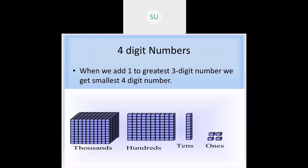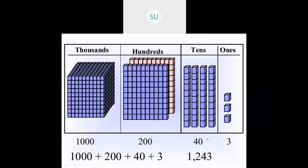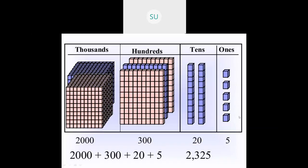We saw what are four digit numbers — we did a recap of what you studied in third standard. Four digit numbers: you get the smallest four digit number when you add one to the greatest three digit number. In a four digit number you have four place values: ones, tens, hundreds, and thousands. For example, these blocks represent 1243 and these blocks represent 2325.